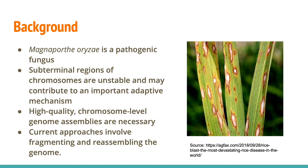Current approaches to genome assembly involve fragmenting the genome, sequencing those fragments, and then reassembling the genome. Unique portions of the genome are not an issue, but you can see how repetitive regions may cause confusion when piecing things back together.